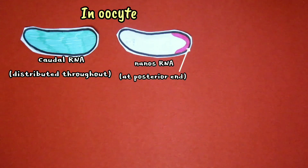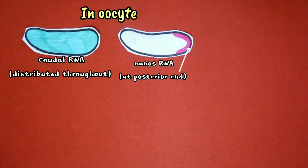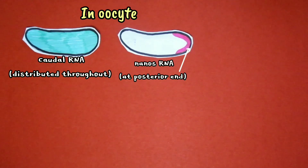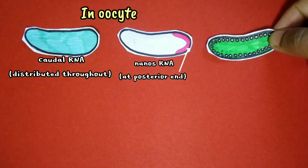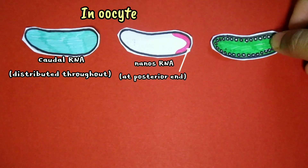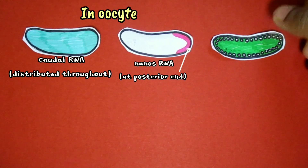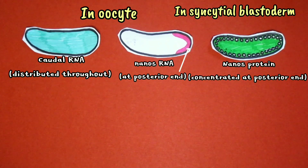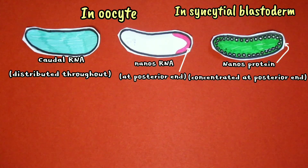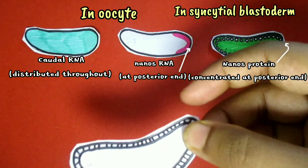Conversely, wherever bicoid protein is scarce, caudal RNA is translated into protein. The translational regulation of caudal RNA by bicoid protein is therefore responsible for the gradient of caudal protein that forms in the embryo. Because caudal protein is a specific activator of genes that control posterior differentiation, the part of the embryo with the highest concentration of caudal protein develops posterior structures.